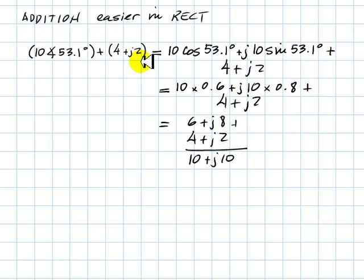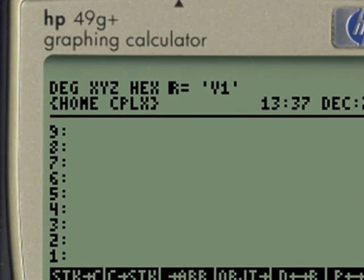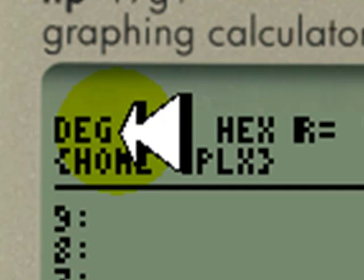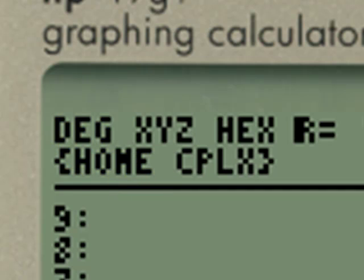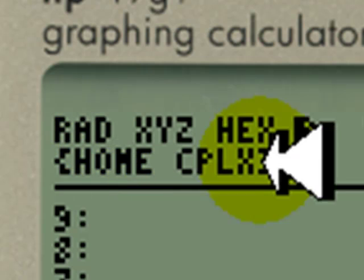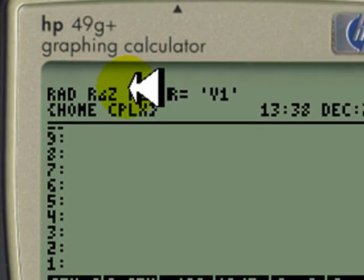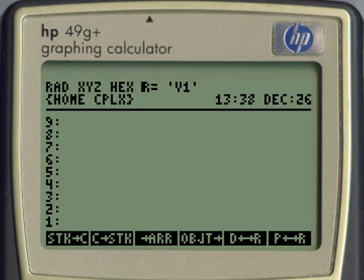And that is the result of that addition. When working with a calculator to do operations on complex numbers, make sure that you are aware of whether you're working in degrees or in radians, and whether you're working in rectangular mode or in polar mode.